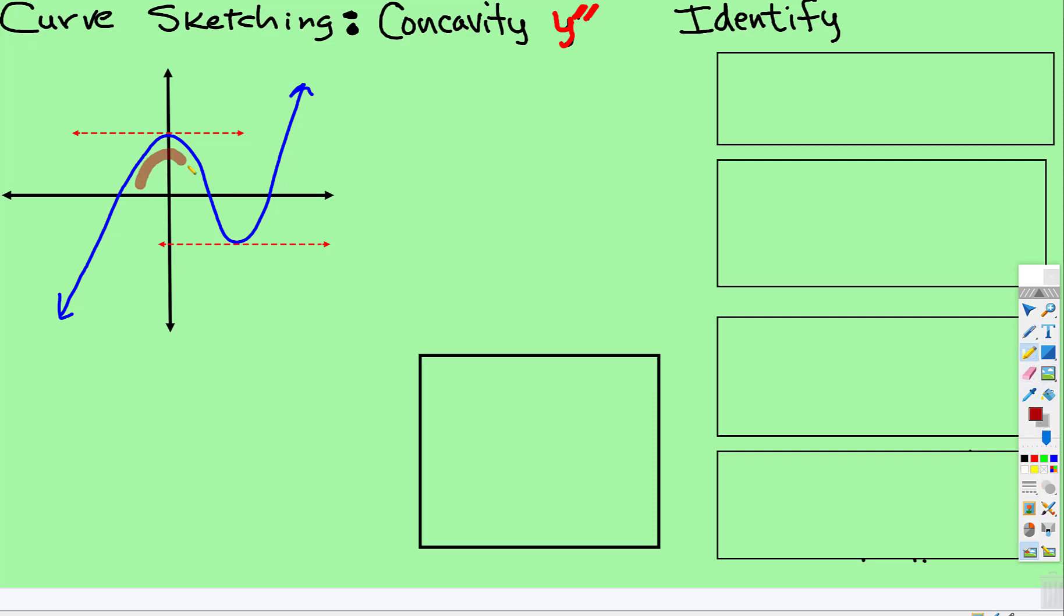And the concavity is the curviness of the graph, so we're not looking at the line itself, but we're looking at the caves that are created. And then from where to where do they have that shape of a cave? Well, so let's follow, let me do this.